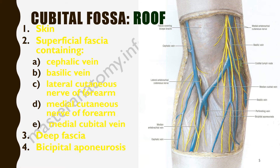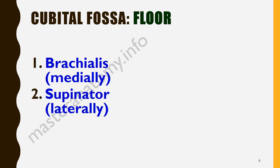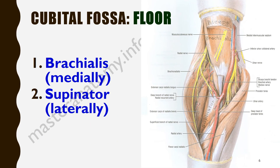Now the floor. The floor is formed by two muscles: the brachialis medially, and the supinator muscle laterally. So the supinator muscle is lateral and the brachialis is underneath the tendon and biceps.